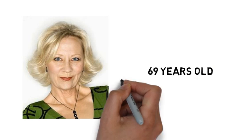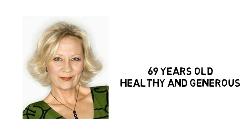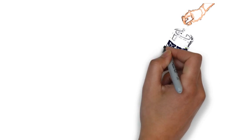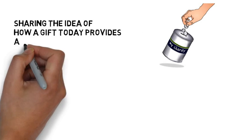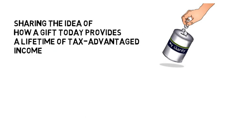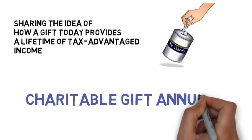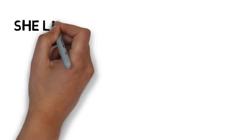This is Linda. She's 69 years young and she's a healthy, generous individual. Her favorite charity has been sharing an idea of how to gift today that provides a lifetime of tax-advantaged income called a charitable gift annuity. She likes the idea.